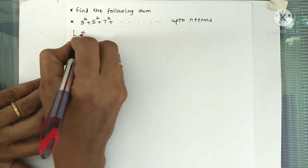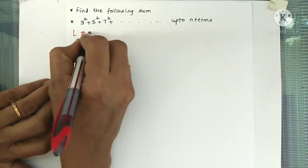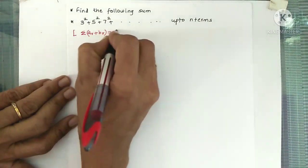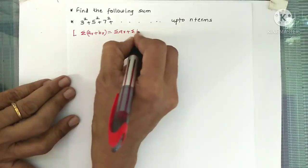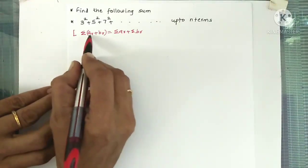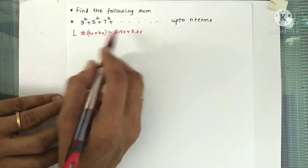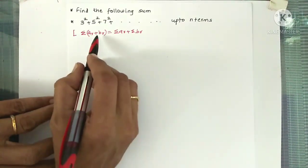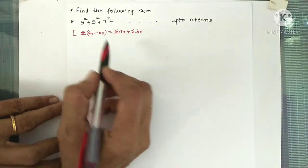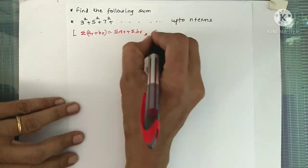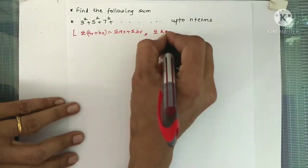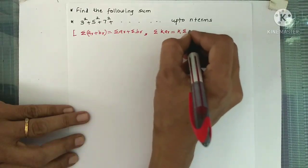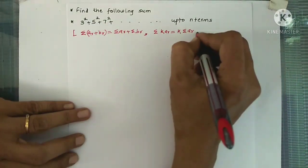First, let's revise what we have done in the previous video. We studied properties of sigma notation. The first property is: sigma of (ar + br) equals sigma ar plus sigma br — that means we write sigma notation for both terms separately, with plus or minus sign in between.